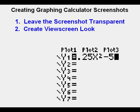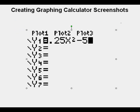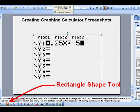To create a view screen like background, select the screenshot object with a single left click. You will see the edges outlined with the little circles at the corners and at the sides top and bottom, as well as the green dot at the top you can use to rotate the image. Go here at the bottom to access the rectangle shape tool to trace a rectangle around the screenshot of the view screen.